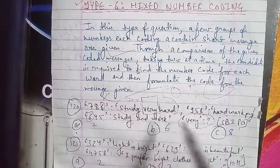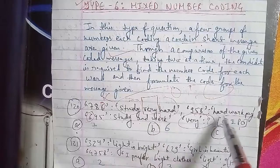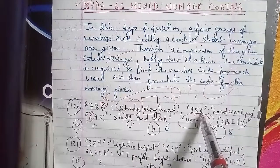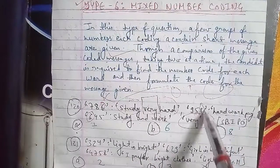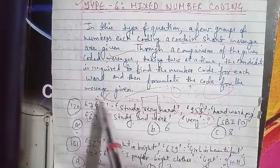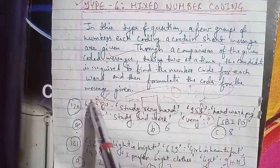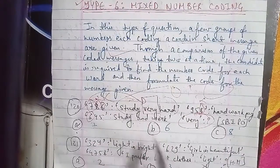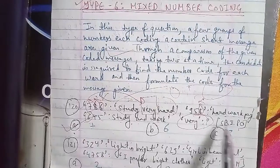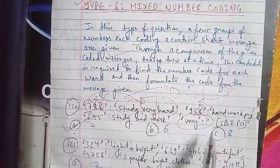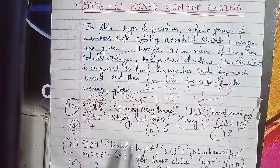Moving on with question number 121: 324 is coded as light is bright, 629 is coded as girls is beautiful, and 4758 is coded as I prefer bright clothes.